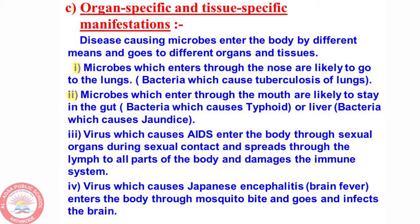Microbes that enter through the mouth are likely to stay in the gut, as in the case of typhoid, or the liver, as in jaundice. But this need not always be the case. For example, in AIDS the virus enters through the sexual organs but spreads through the lymph nodes and damages the immune system. The virus that causes Japanese encephalitis enters the body through a mosquito bite and goes to infect the brain.